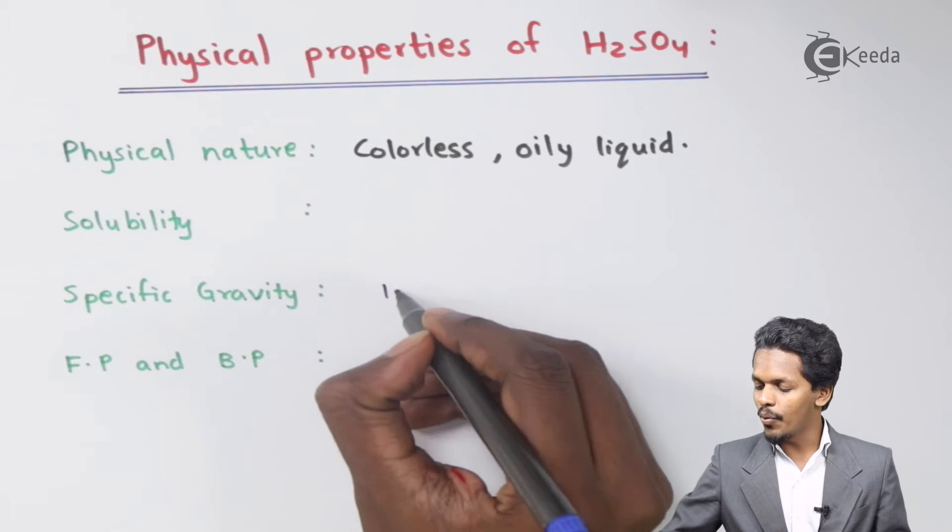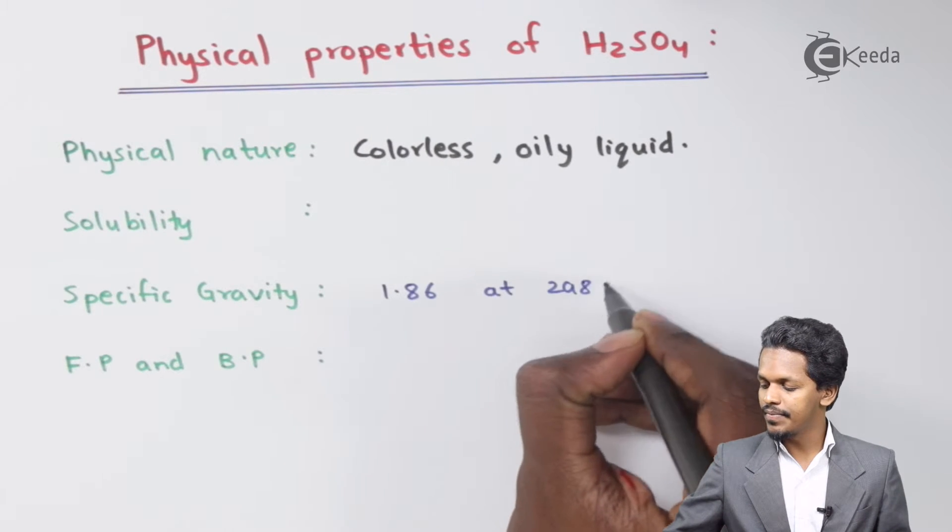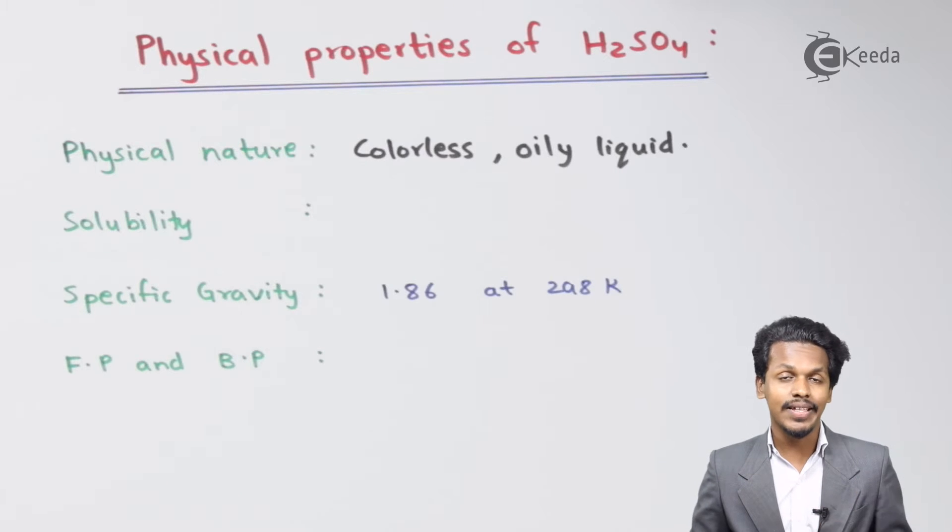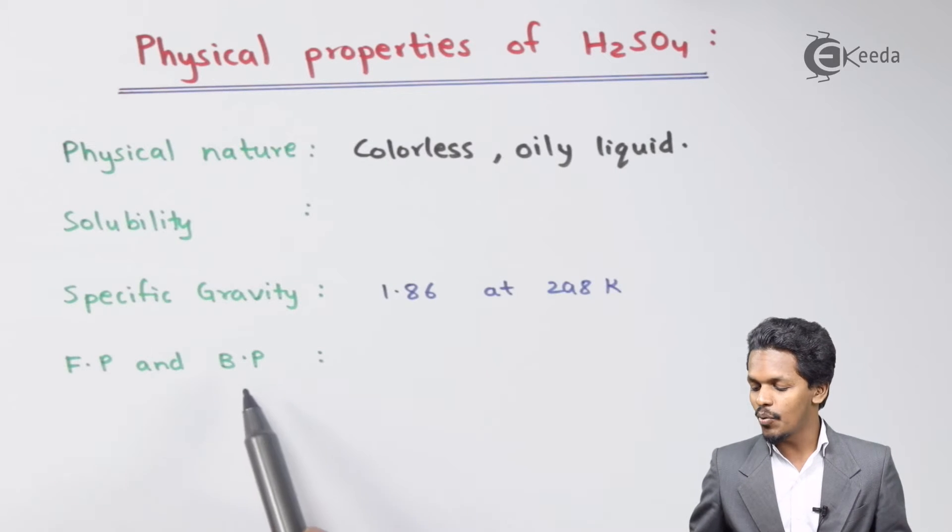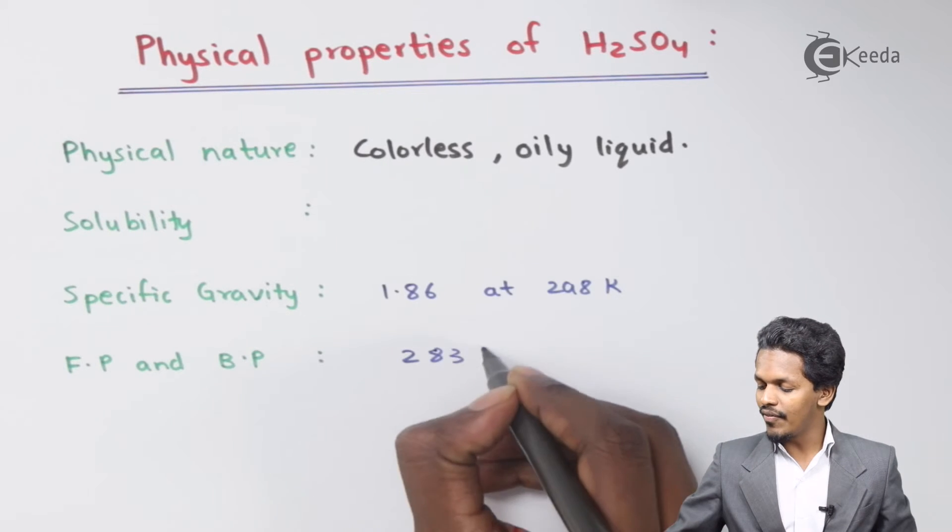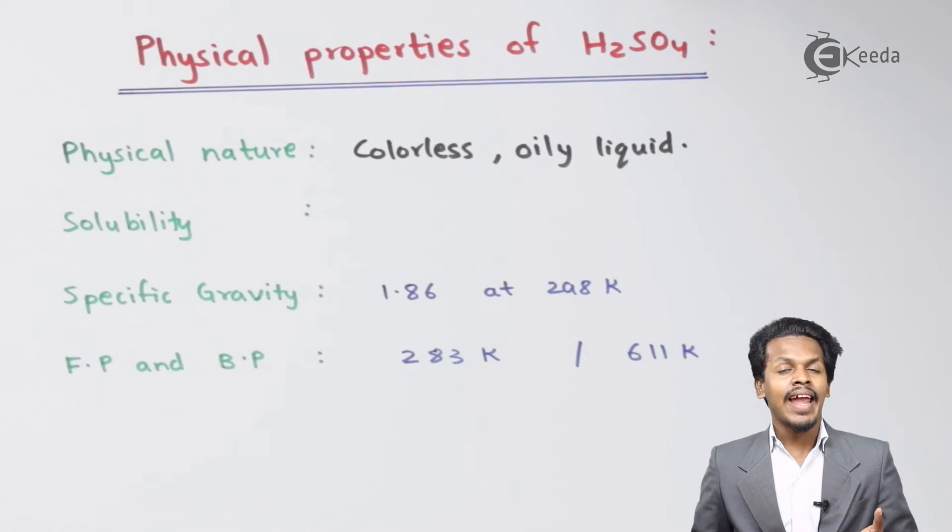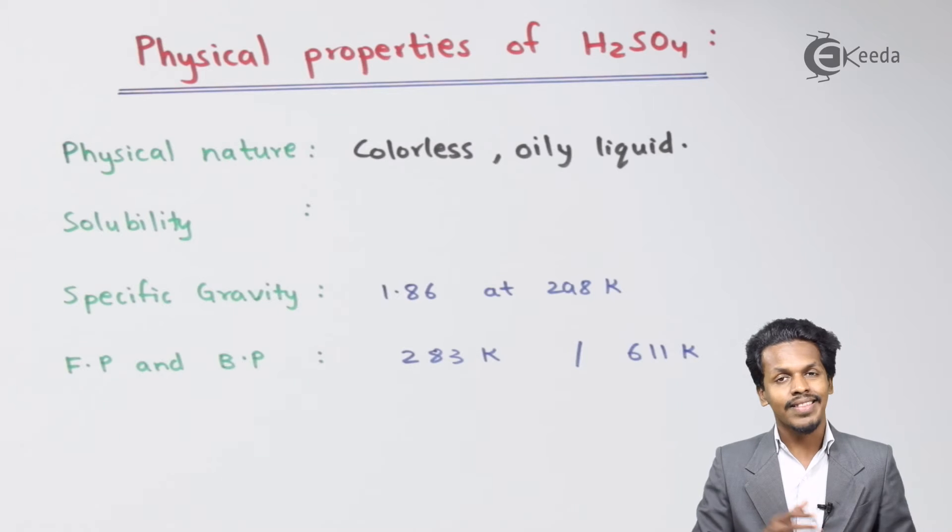Talking about the freezing point and boiling point, it has been found that H2SO4 freezes at 283 kelvin and boils at 611 kelvin. As I mentioned earlier, H2SO4 is a very dense liquid, and that's the reason it has an oily structure and is very much viscous also.